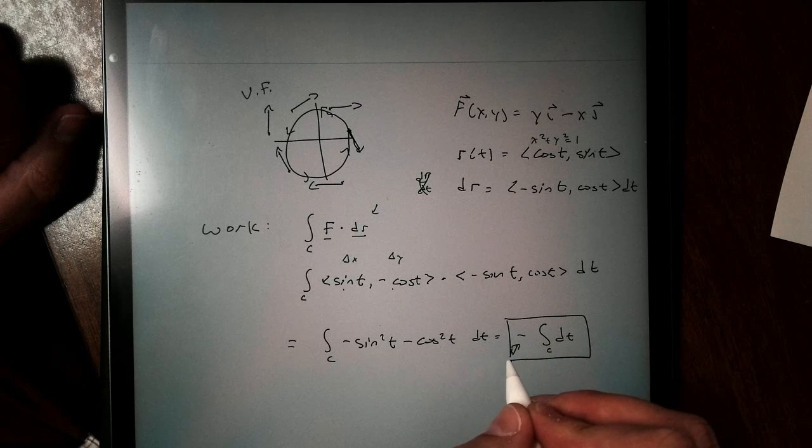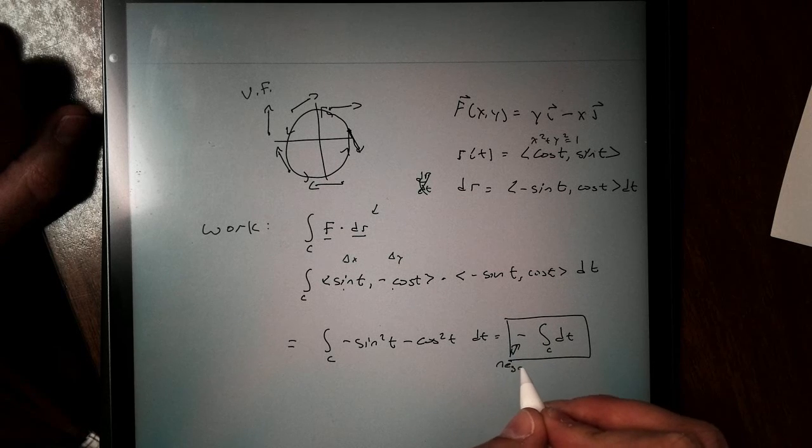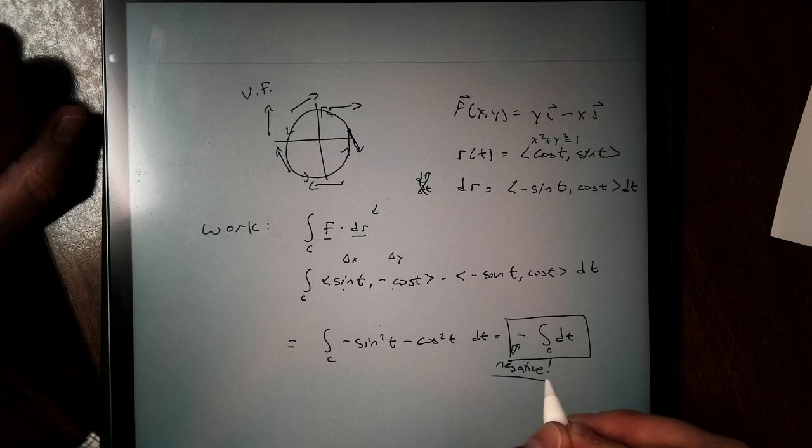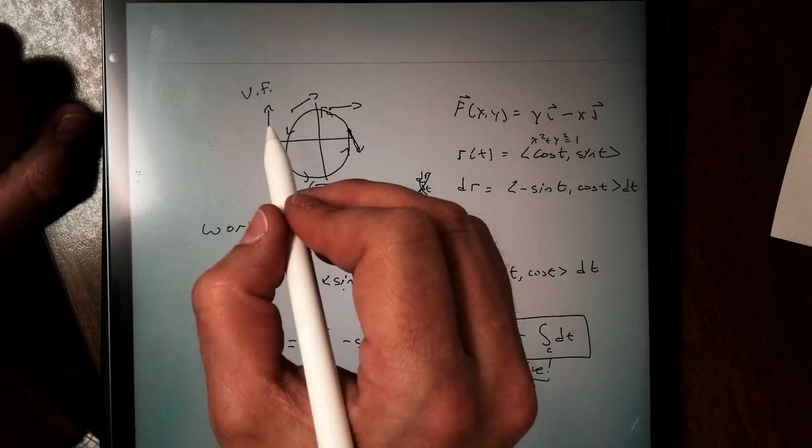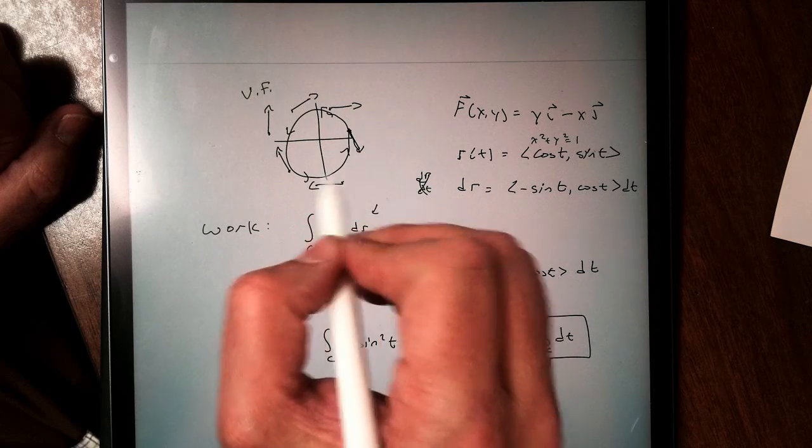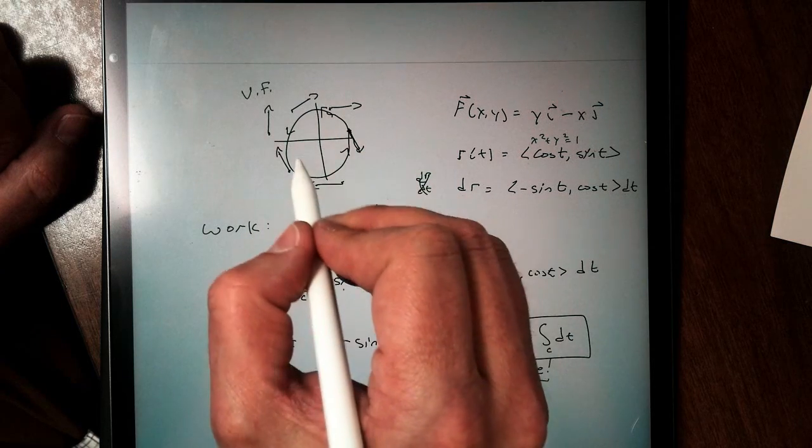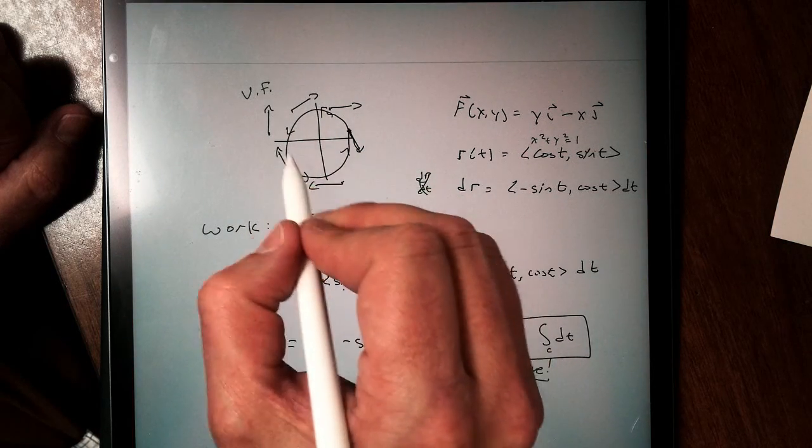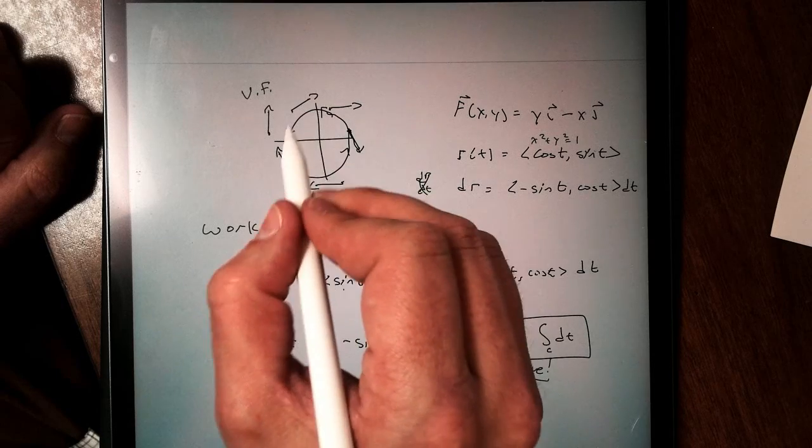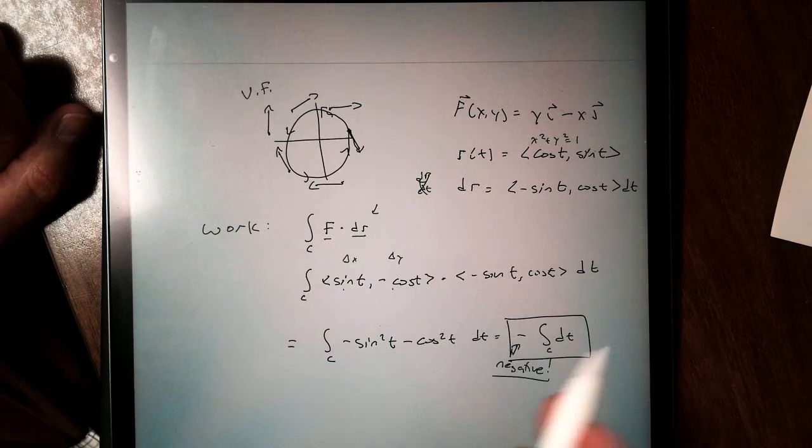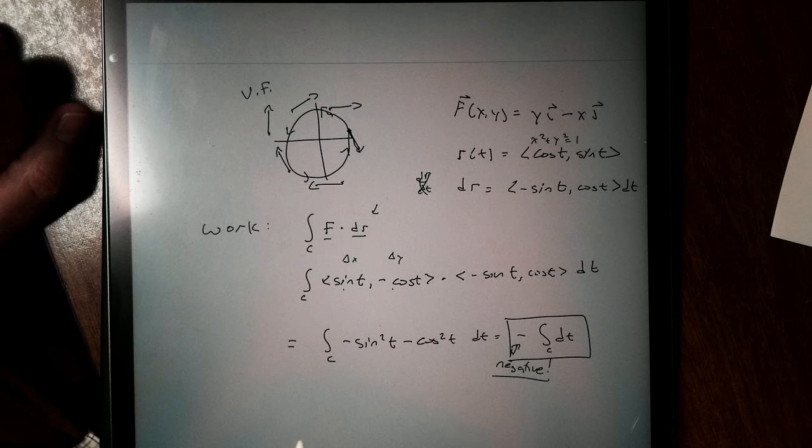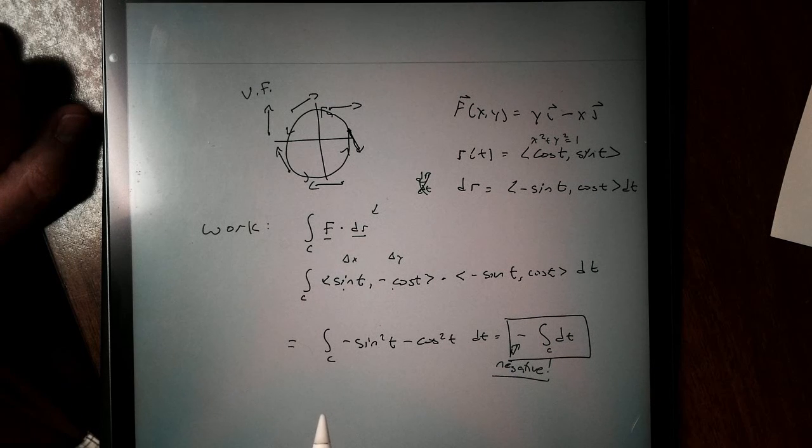Notice this is negative. We should expect this to be negative, because take a look. Our vector field is going in the clockwise rotation, but our path is in the counterclockwise rotation. So because they're going in opposite directions, we should get a negative amount of work in this one.